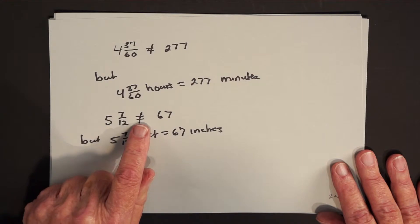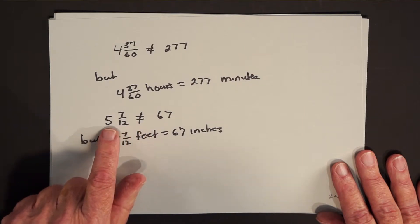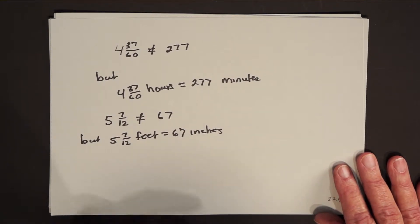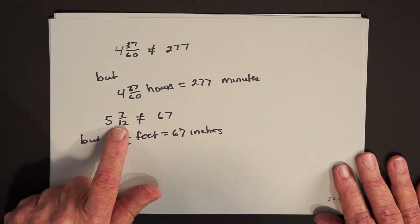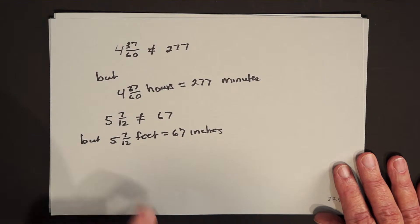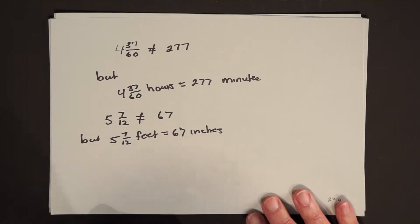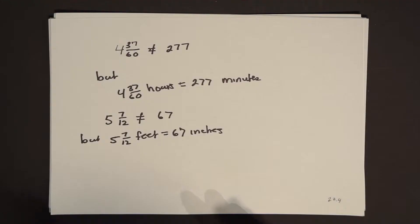But notice we can't use the equal sign here because the 5 and 7 twelfths and the 67 are modifying different nouns. So even though 5 and 7 twelfths is not equal to 67, 5 and 7 twelfths feet equals 67 inches. And you see, if I were allowing myself to use the nouns here, and I didn't want to talk about a fractional part of a foot or a fractional part of an hour, I would just use my units to be minutes and inches.